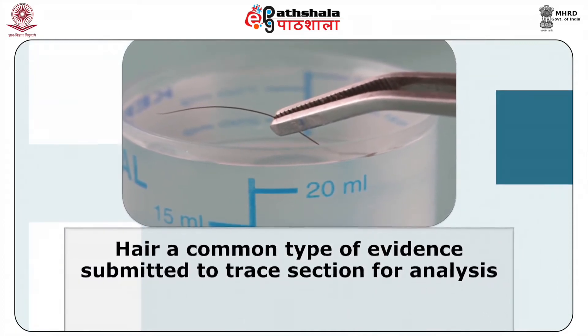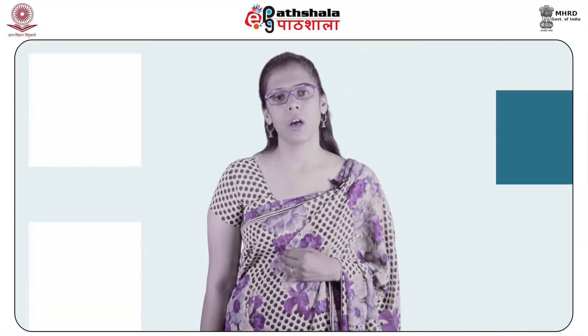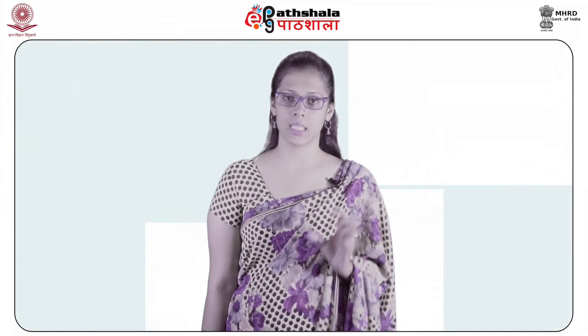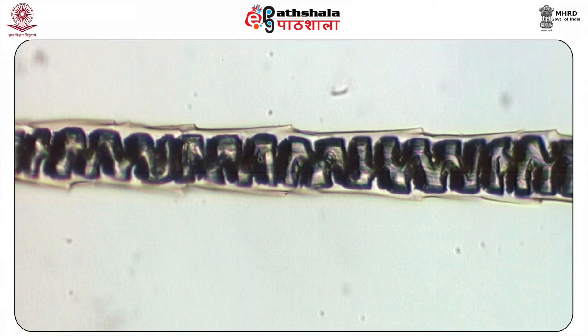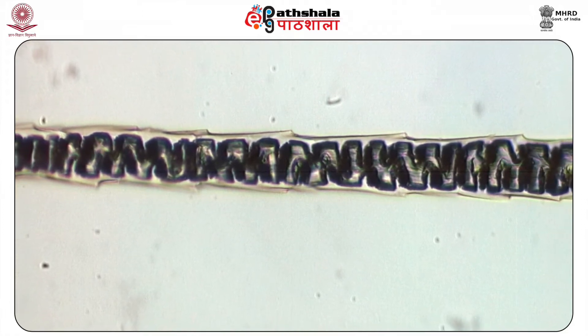Forensic comparison of hair is a common type of evidence submitted to the trace section for analysis. On average, humans shed approximately 100 head hairs per day. Because we are continuously shedding hairs, forensic analysis of hairs is beneficial to establishing associations between individuals, or between a person and an environment. For example, a questioned hair from a victim's clothing is examined and found to be consistent with the suspect's hair, providing evidence that an association may have occurred.